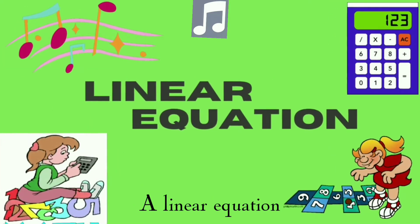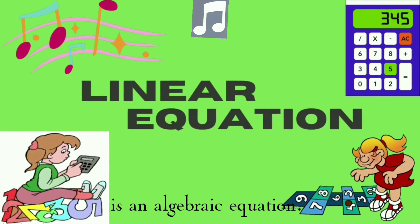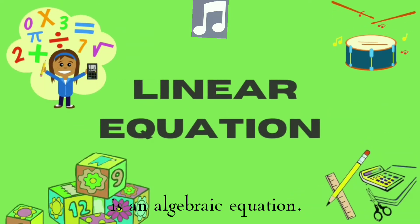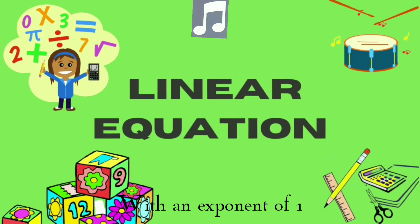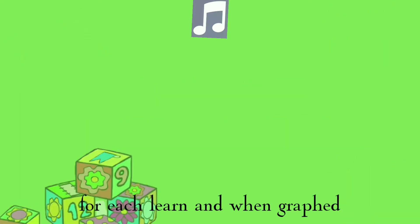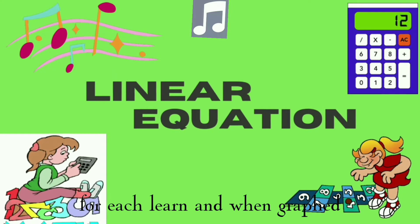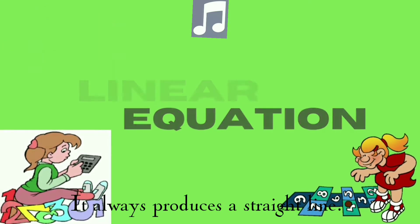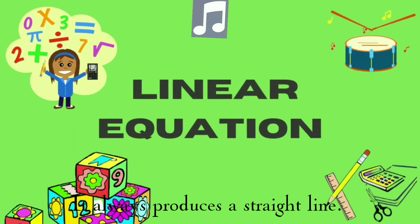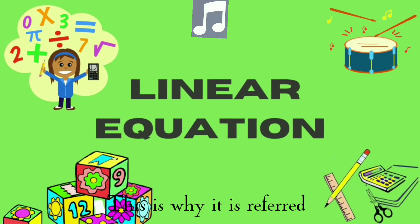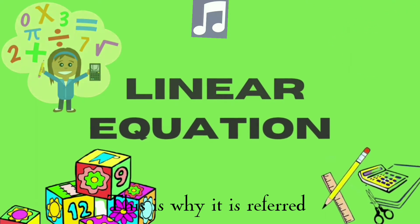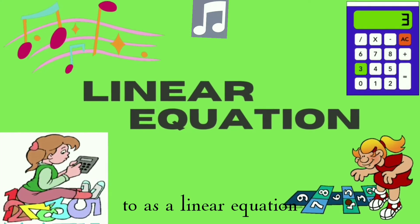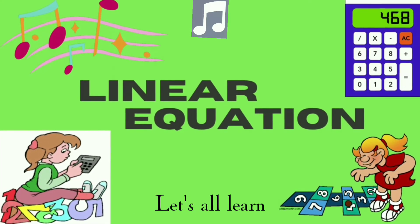A linear equation is an algebraic equation with an exponent of one for each term. And when it's graphed, it always produces a straight line. This is why it is referred to as a linear equation. Let's all learn with linear equations.